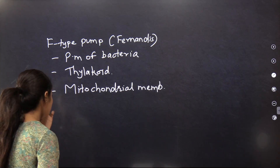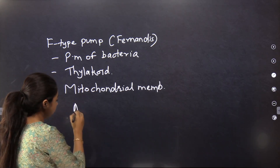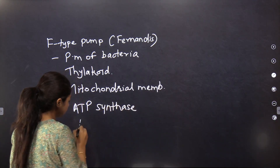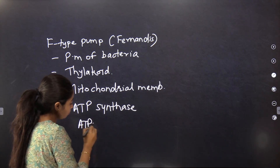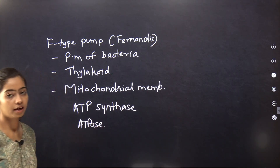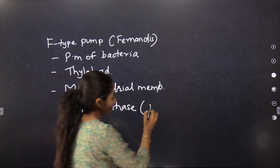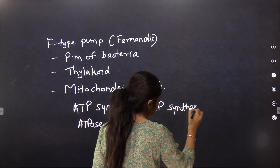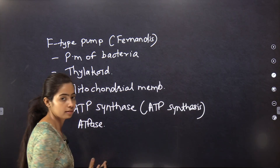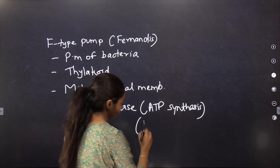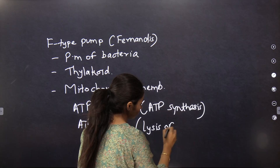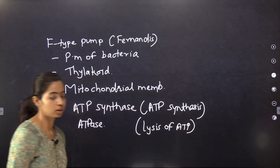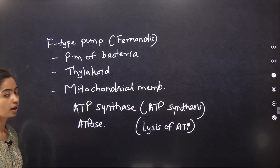In the F-type pump, there is the presence of both ATP synthase and ATPase activity. ATP synthase means the formation or synthesis of ATP, while ATPase means the lysis of ATP. It has both activities — ATP synthesis and lysis of ATP.